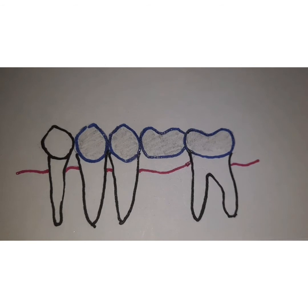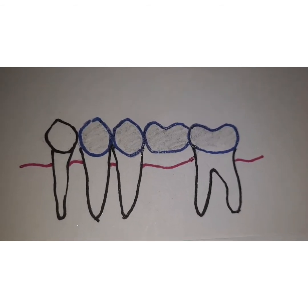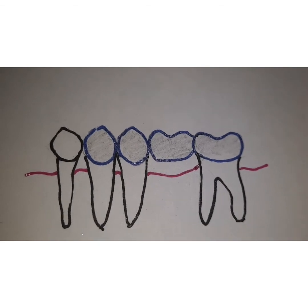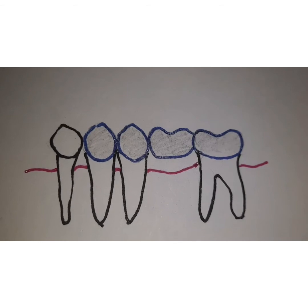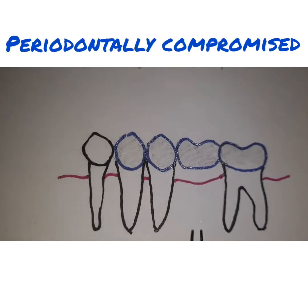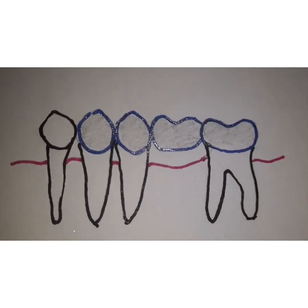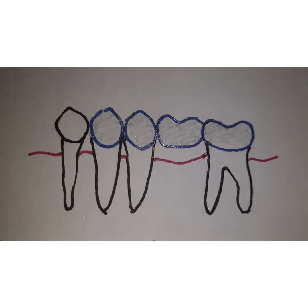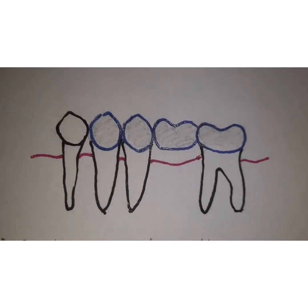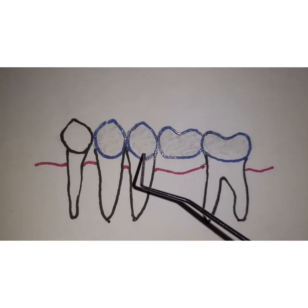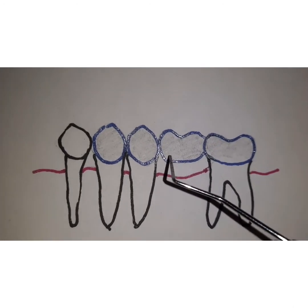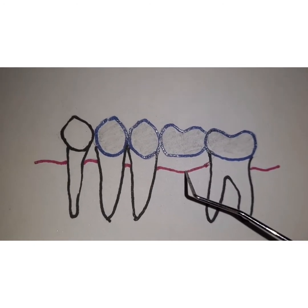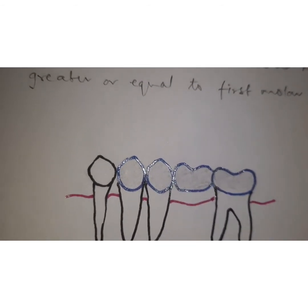There are various clinical situations in which Ante's law may require modification. One clinical situation is when there is bone loss from periodontal disease — as you can see in the figure, there is a considerable amount of bone loss. In such a situation, we increase the number of abutment teeth used for support. Where you have good periodontal support, you may only require a premolar and a molar to support and replace a single mandibular molar, but if there is reduced periodontal support or bone loss, you need an additional abutment tooth for support.